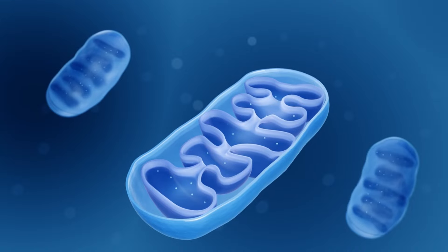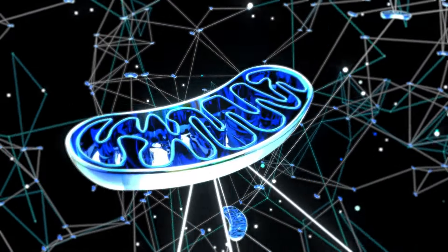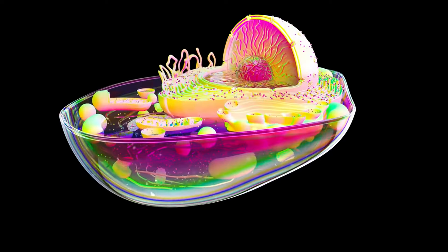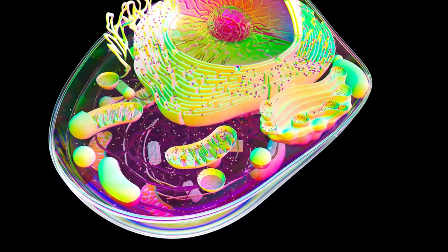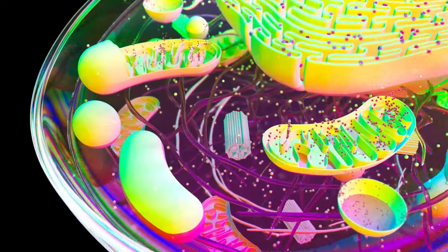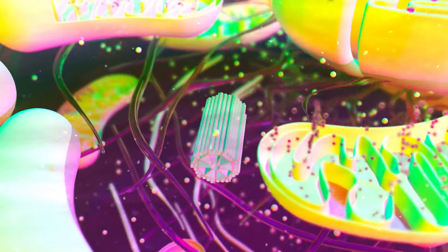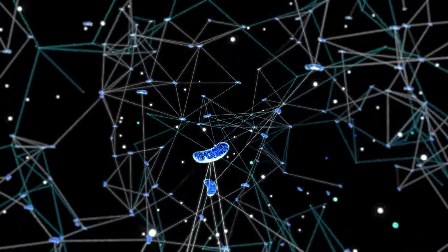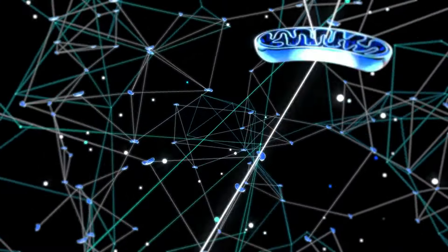So what exactly are mitochondria? You can think of them as the powerhouses of our cells. They generate most of the cell's energy supply in the form of adenosine triphosphate or ATP through a process called oxidative phosphorylation. This is how our cells get the energy they need to function correctly.